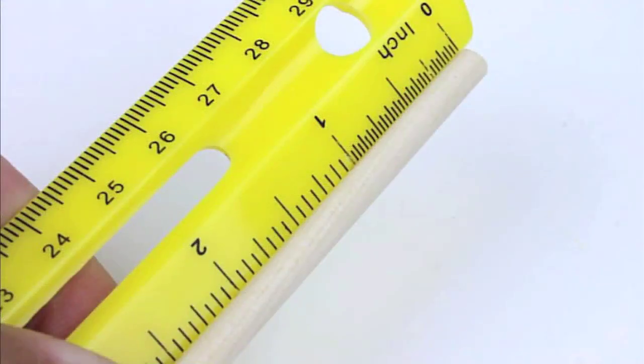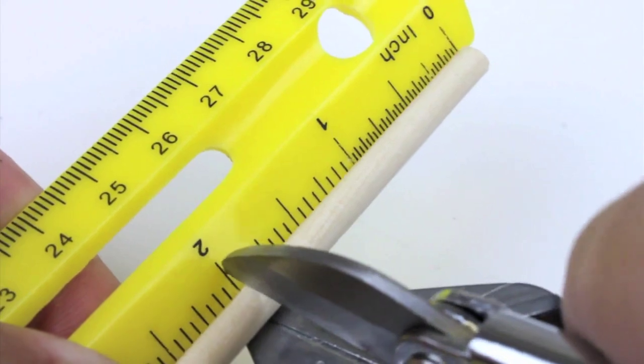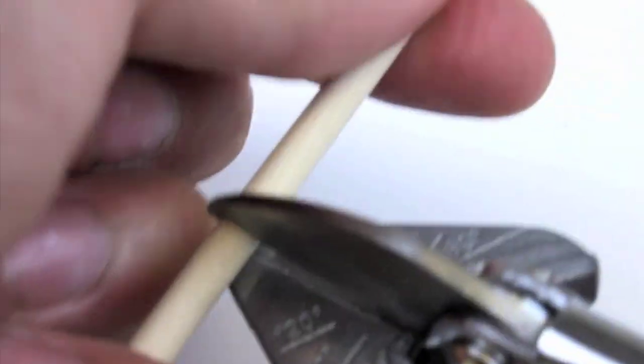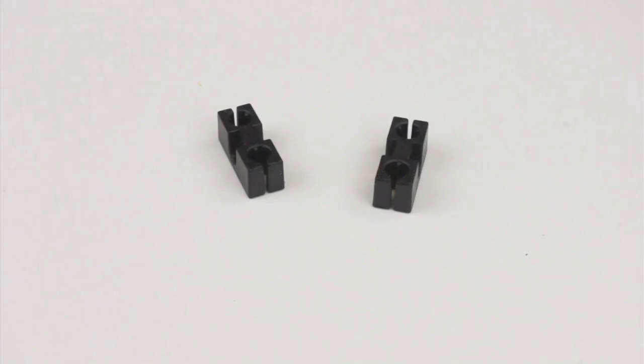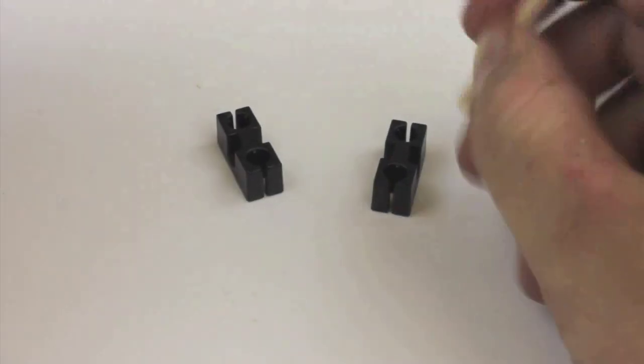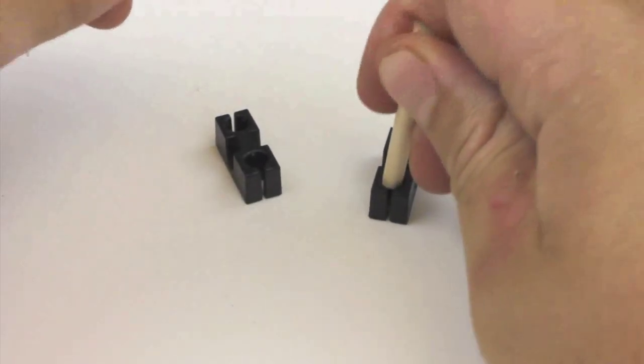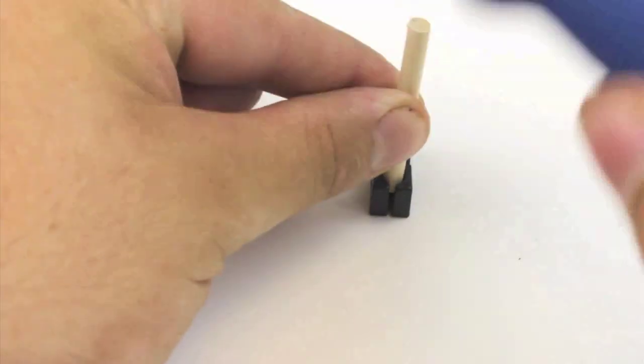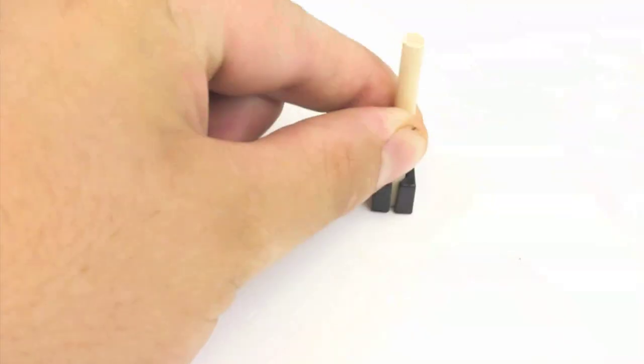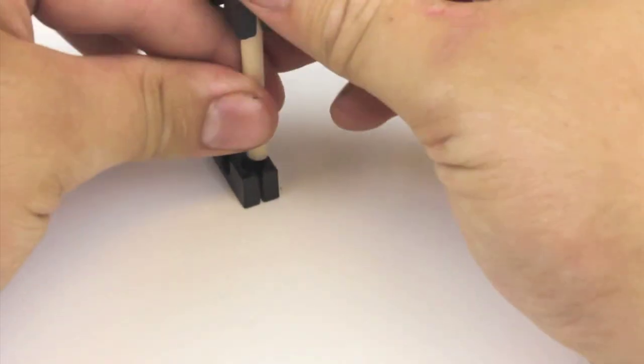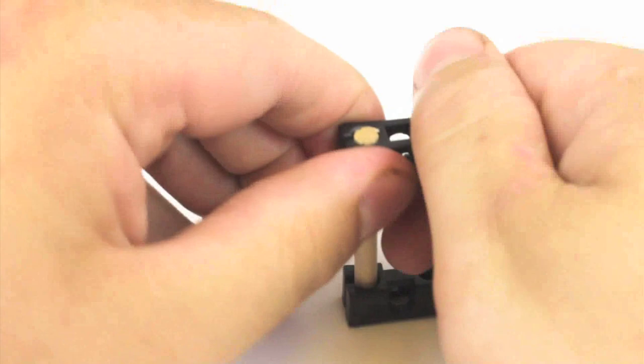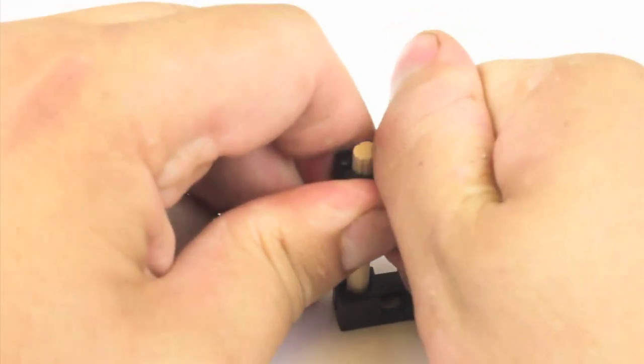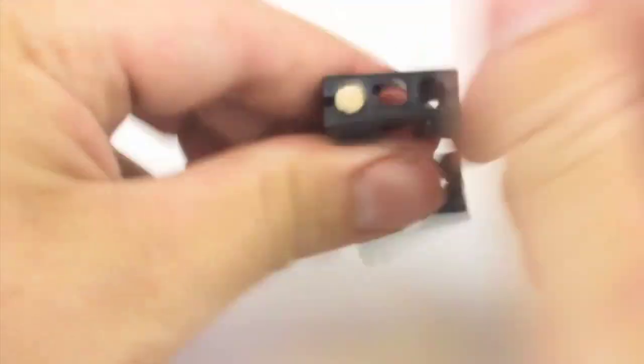The first step is to cut four sections of dowels that are each 55mm long, which is about 2 inches. Take one of your cut dowels and place it into a perpendicular block. If it's a little hard to push in, you can tap it with the easy cutters. Place the other end of the dowel into a perpendicular block. Make sure they're facing the same way, then slide the perpendicular blocks down about 5mm, which is about 3/16ths of an inch.